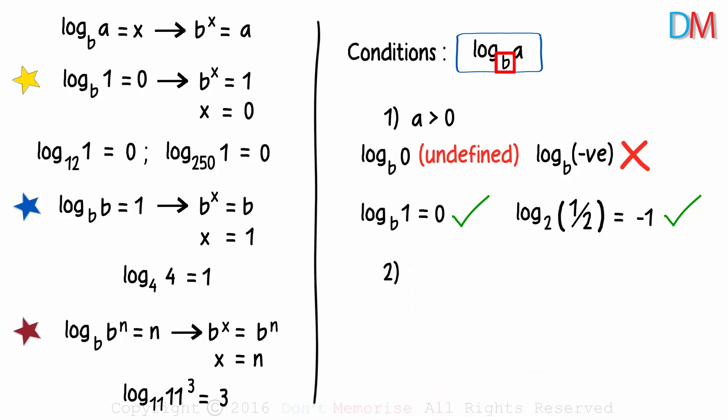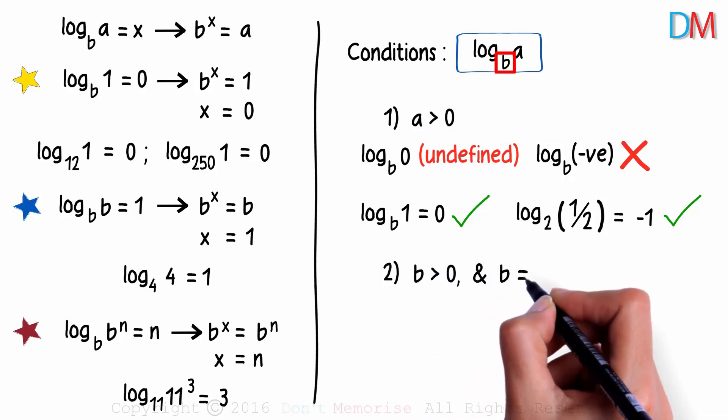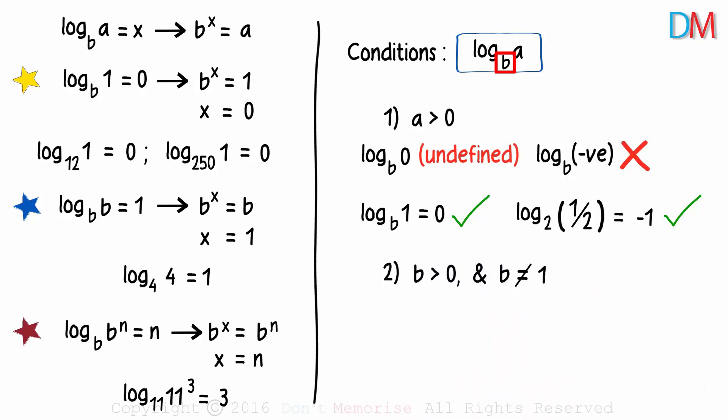What are the conditions for b? The base b has to be greater than zero and it cannot be equal to one. Yes, the base b cannot be equal to one. So the log of a to the negative number base is incorrect. Why is one not allowed as the base? I want you to tax your brain a bit and come up with an answer. Why can't the base be equal to one?